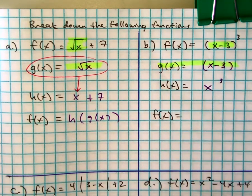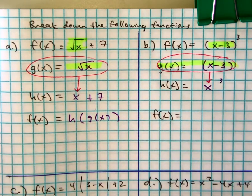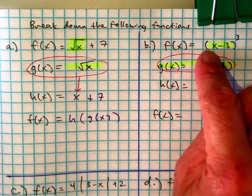Does that make sense? We're putting the g of x into here, and that gives us this x minus 3 cubed.